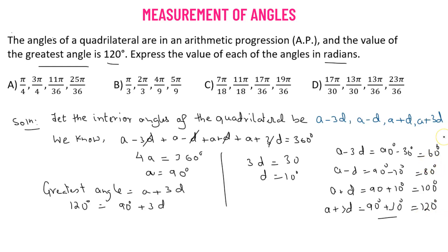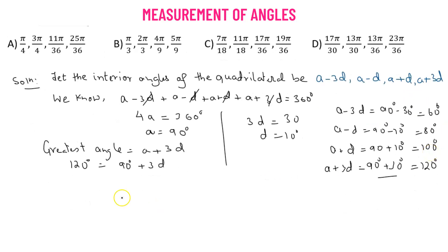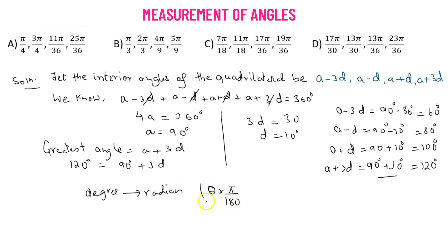Each of the angles is in degrees, so we need to convert them to the corresponding radian measure. To convert an angle from degrees to radians, we take the angle value in degrees and multiply it by pi over 180. This converts any degree measure to radians.